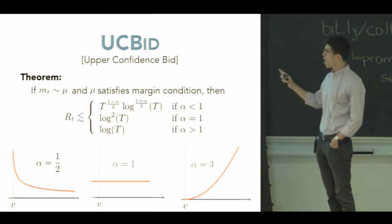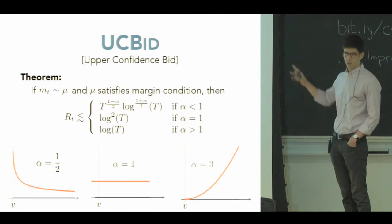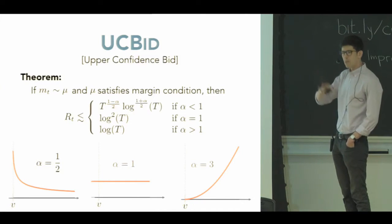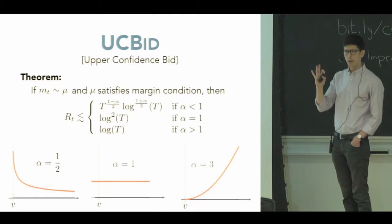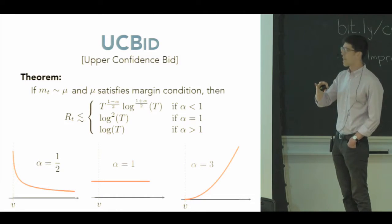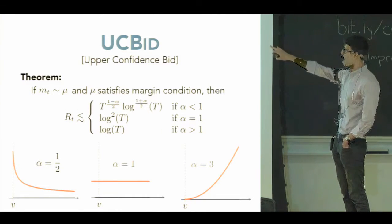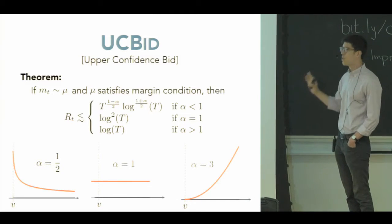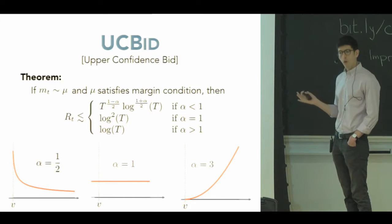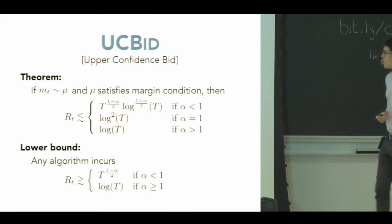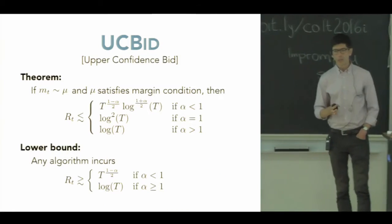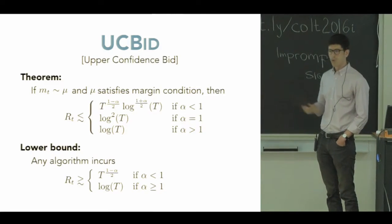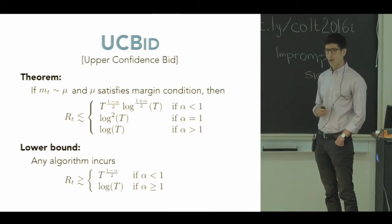And indeed we can pick this up in the rates. This algorithm gives the following set of rates under a margin condition. And the line to pay attention to is really the top one here. As alpha goes from 0 to 1, I'm smoothly interpolating between those two rates I saw on the previous page. When I'm at 0, I get root T log T, and when I'm at 1 or above 1, I just get back to logs. So this allows us to interpolate between those two rates we saw earlier. Moreover, these rates are optimal. We can show that there's a set of distributions such that any algorithm is going to incur regret of this order up to log factors. So this algorithm does as best as we can hope at the moment.